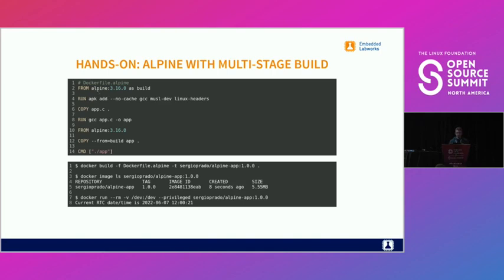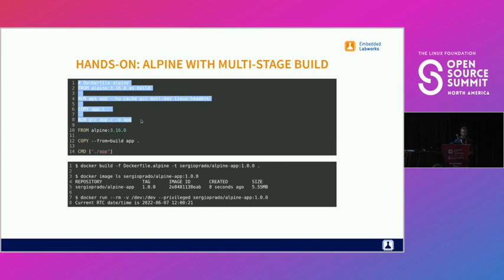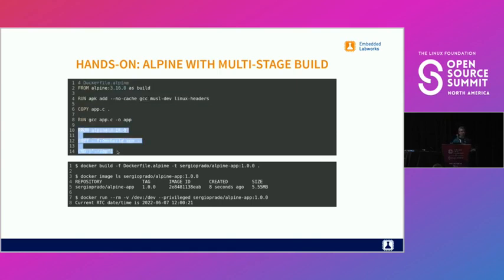Another approach is to use a smaller image with a multi-stage build. Here I'm building using Alpine, which is much smaller than Debian. There's one stage just to build the application and another stage to build the final container with that application. Running the commands, we end up with a smaller image of just five megabytes, and it works.